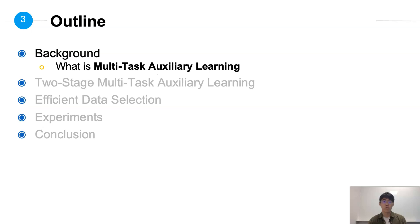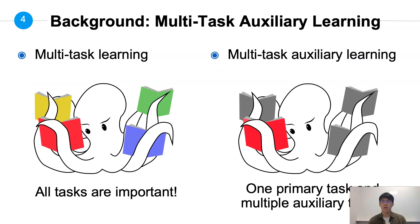We are going to start from the background. What is Multitask Auxiliary Learning? Here is a simple demonstration of the difference between Multitask Learning and Multitask Auxiliary Learning. In Multitask Learning, the model needs to learn all the tasks and evaluate on each of them. However, in Multitask Auxiliary Learning, though the model also learns multiple tasks, it only evaluates on the primary task. The other tasks are simply supplementary materials to help the model perform better on the primary task.